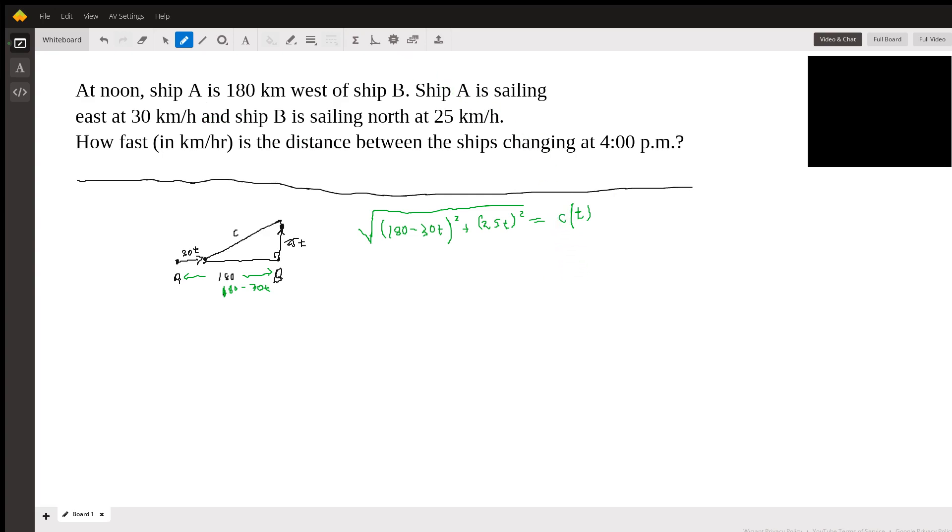So what we'll do is we'll just clean this up a little bit. You would have to foil it out and combine like terms, so you'd have 180 squared here minus—let's see, 30 times 180 times 2, so it's 10,800T times 2. I'll just say 2 times 5,400T.